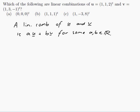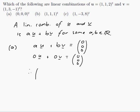Now that we know the definition, we can do part a. What we want is a·u plus b·v to equal [0, 0, 0] transpose. Well, that's easy. Zero times u plus zero times v equals [0, 0, 0]. So therefore [0, 0, 0] is a linear combination of u and v. In fact, for any vectors at all, the zero vector would be a linear combination of them because of the same idea.